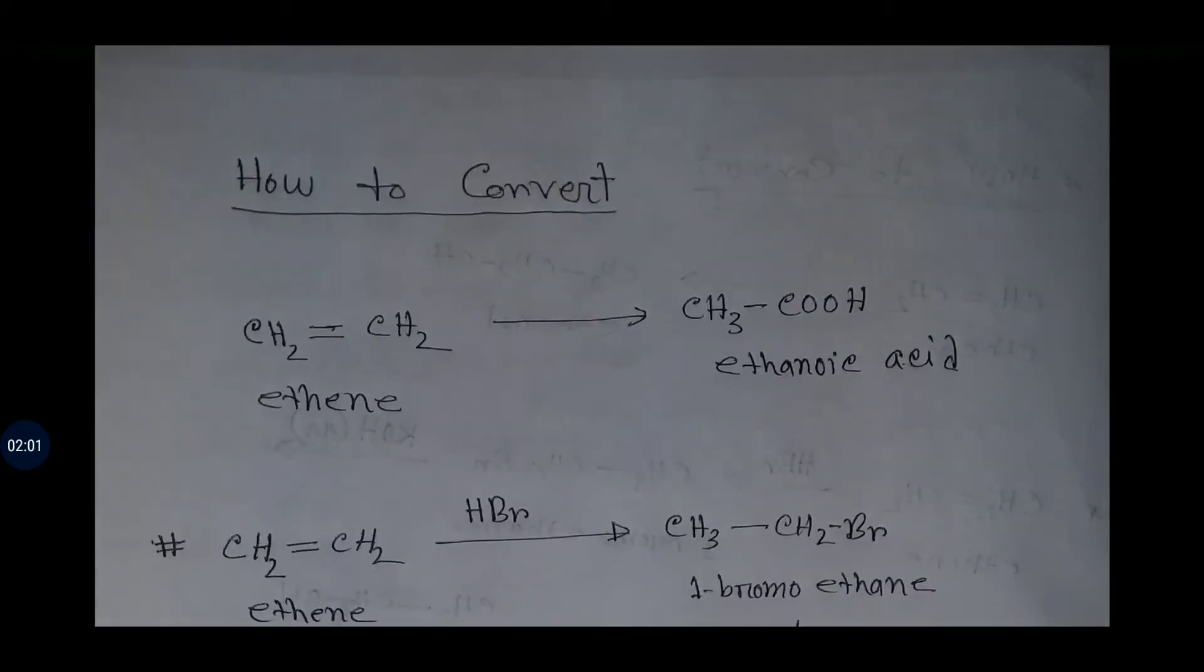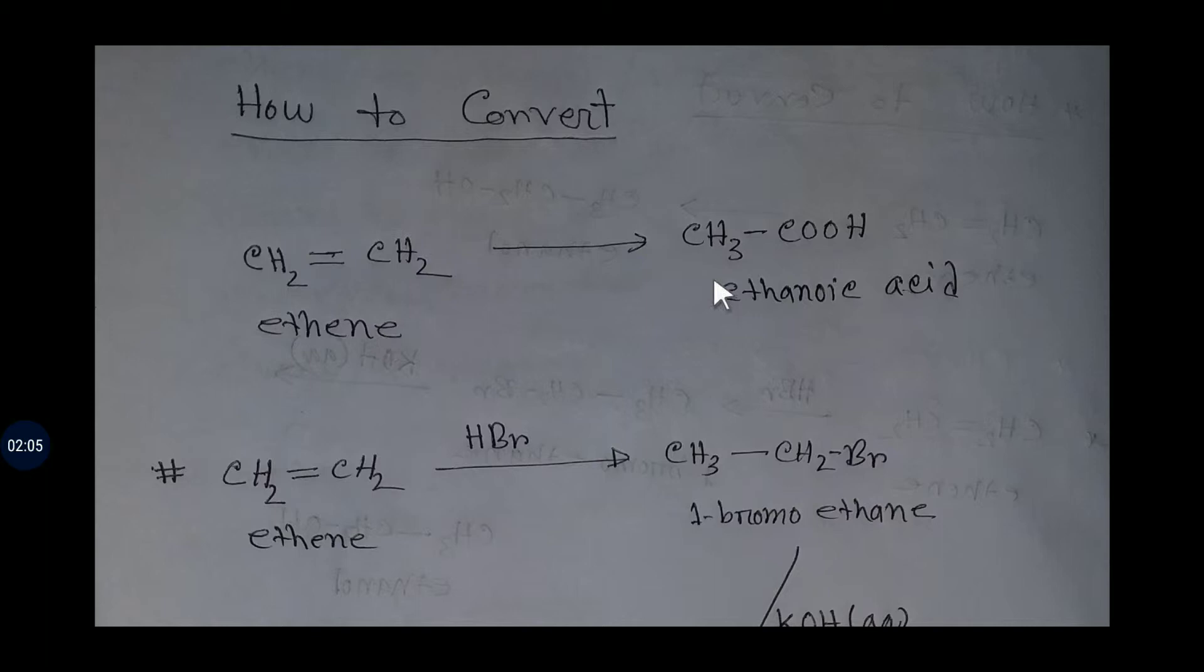Now we'll learn how to convert ethene to ethanoic acid. If you add HBr, that is hydrogen bromide, then an addition reaction will happen and you will get